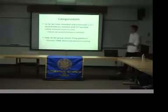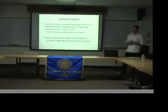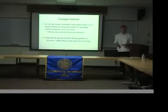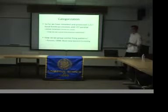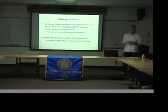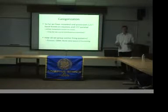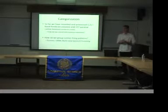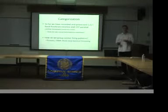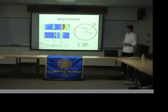We have recorded and processed quite a few neurons in both of these brain regions. How do we look at all the data while avoiding information overload? One approach is to use machine learning algorithms. Essentially, what they do is group similar patterns while separating out different patterns. If we apply this to all of the neurons we've recorded, it allows us to pull out neurons with similar firing patterns and differentiate between different patterns.